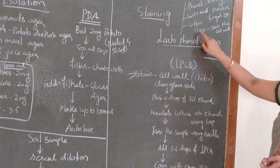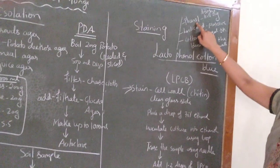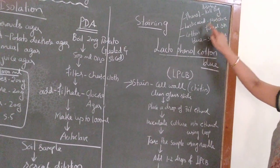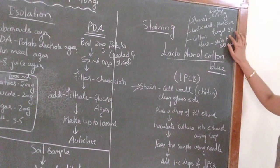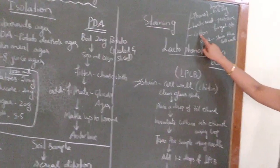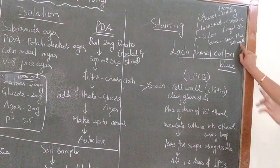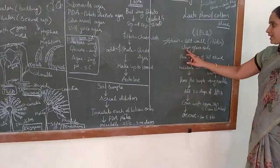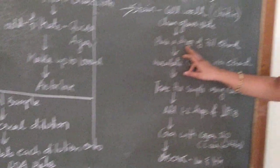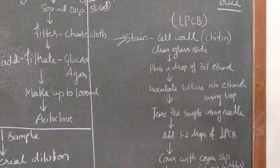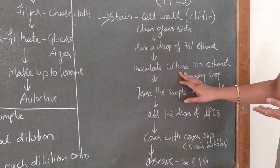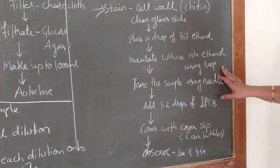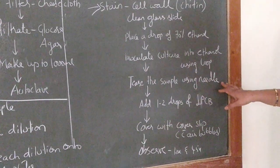Phenol is used as a disinfectant which kills the organism. Lactic acid is used to preserve the fungal structure, whereas cotton blue is used to stain the cell wall. To go with the staining procedure: take a clean glass slide, place a drop of 70% ethanol at the centre of the slide, and inoculate the fungal culture into this drop using a sterile inoculating loop.